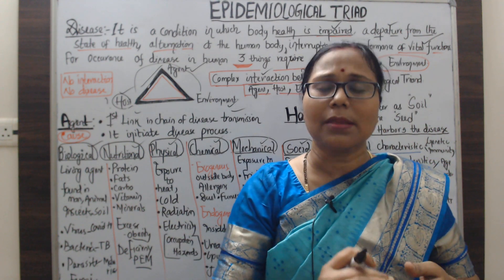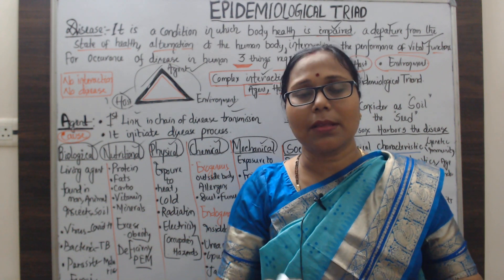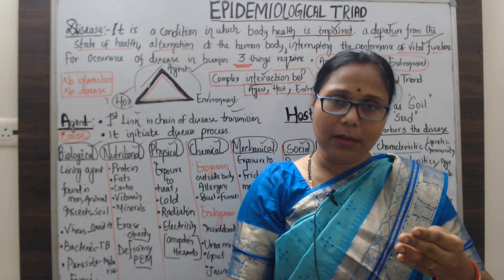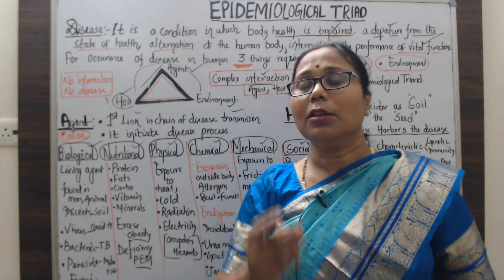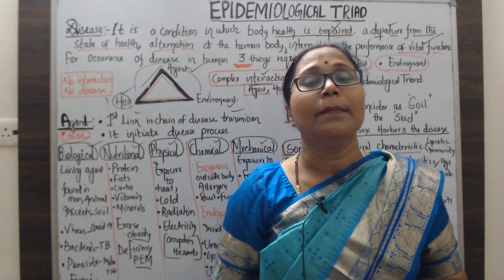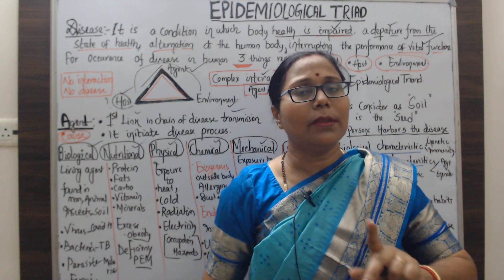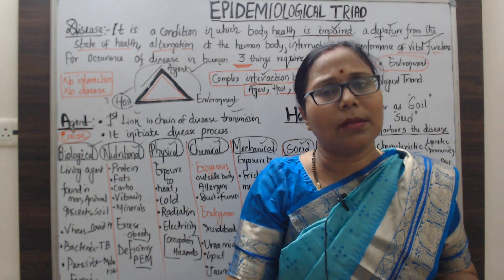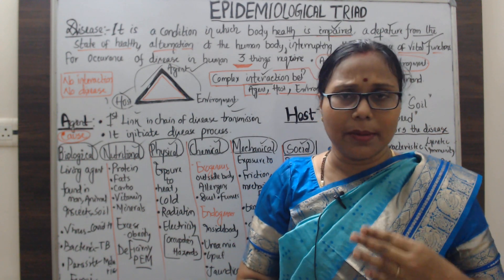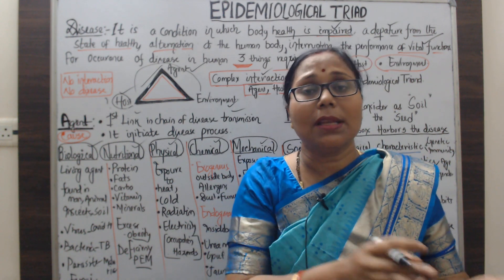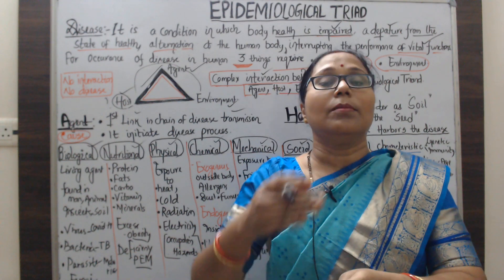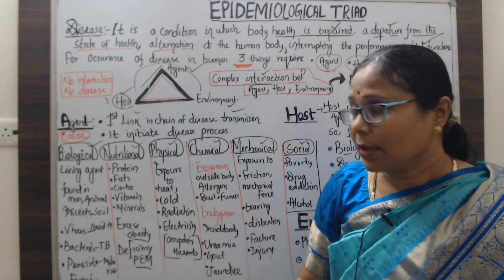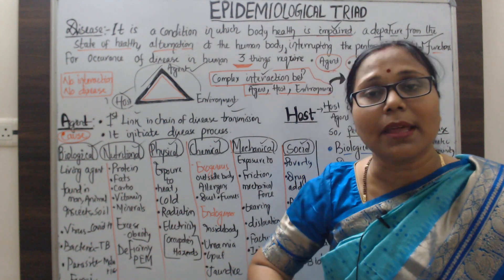The second category is nutritional agents. The five main nutrients — proteins, fats, carbohydrates, vitamins, and minerals — are very important to the body. An excess of any one can lead to illness; for example, excessive intake of protein and fats leads to obesity. A deficiency also leads to disease; for example, vitamin deficiency diseases occur, and in under-five children, deficiency of carbohydrates and protein leads to protein-energy malnutrition.